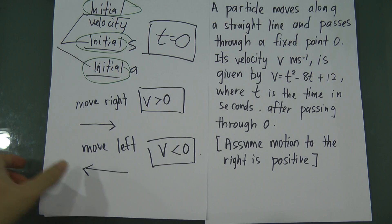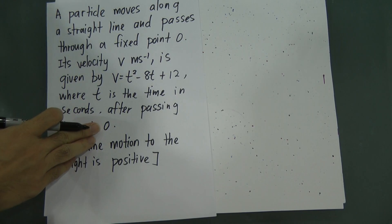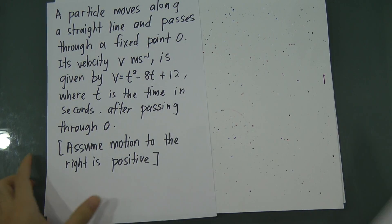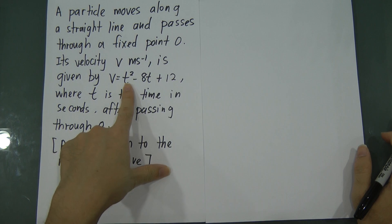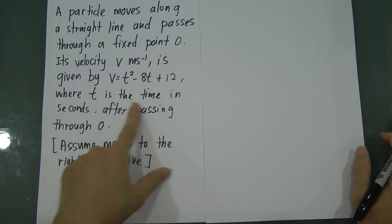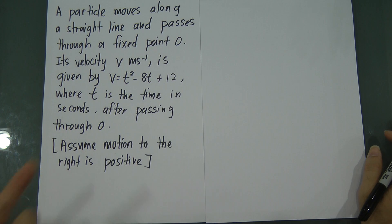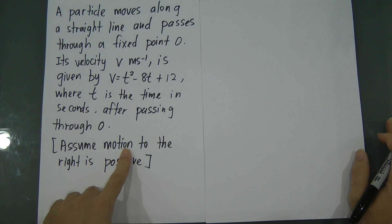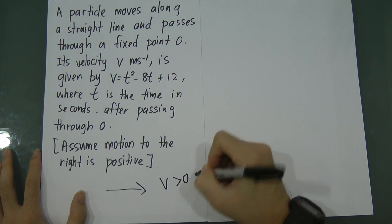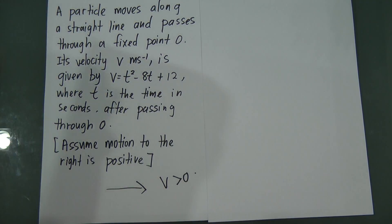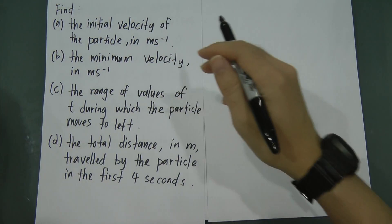Now let's do the question. A particle moves along a straight line and passes through a fixed point O. Its velocity is given by v equals t squared minus 8t plus 12, where t is the time in seconds after passing through O. So s equals zero when t equals zero. Motion to the right is taken as positive. The question asks for the initial velocity.